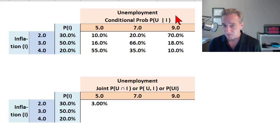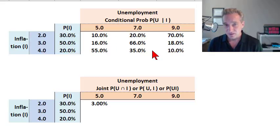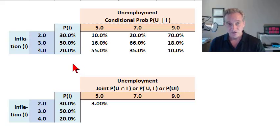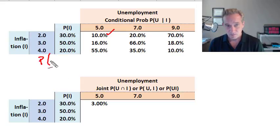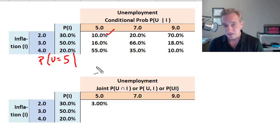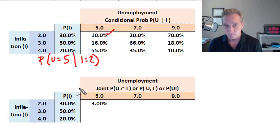My other discrete random variable is unemployment, denoted with U and colored in orange, with three outcomes: unemployment can be either five, seven, or nine percent. Here I'm showing conditional probabilities per the notation. Ten percent is the conditional probability that unemployment will be five in the event of inflation being two. The vertical bar immediately suggests this is a conditional probability: the probability that unemployment equals five, conditional on inflation equaling two, is equal to 10%.